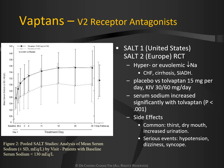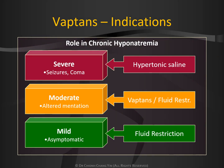The earliest studies showing the effectiveness of vaptans are the SALT studies. SALT-1 was carried out in the United States, while the similarly organized SALT-2 study was carried out in Europe. In patients with chronic heart failure, cirrhosis, and SIADH, serum sodium increased significantly with tolvaptan. Common side effects include thirst, dry mouth, and increased urination. Serious events include hypotension, dizziness, and syncope. Given the potential for serious liver dysfunction, vaptans are usually limited to moderate cases of chronic hyponatremia, especially in patients with altered mentation. Fluid restriction is usually adequate in mild hyponatremia and in asymptomatic patients.